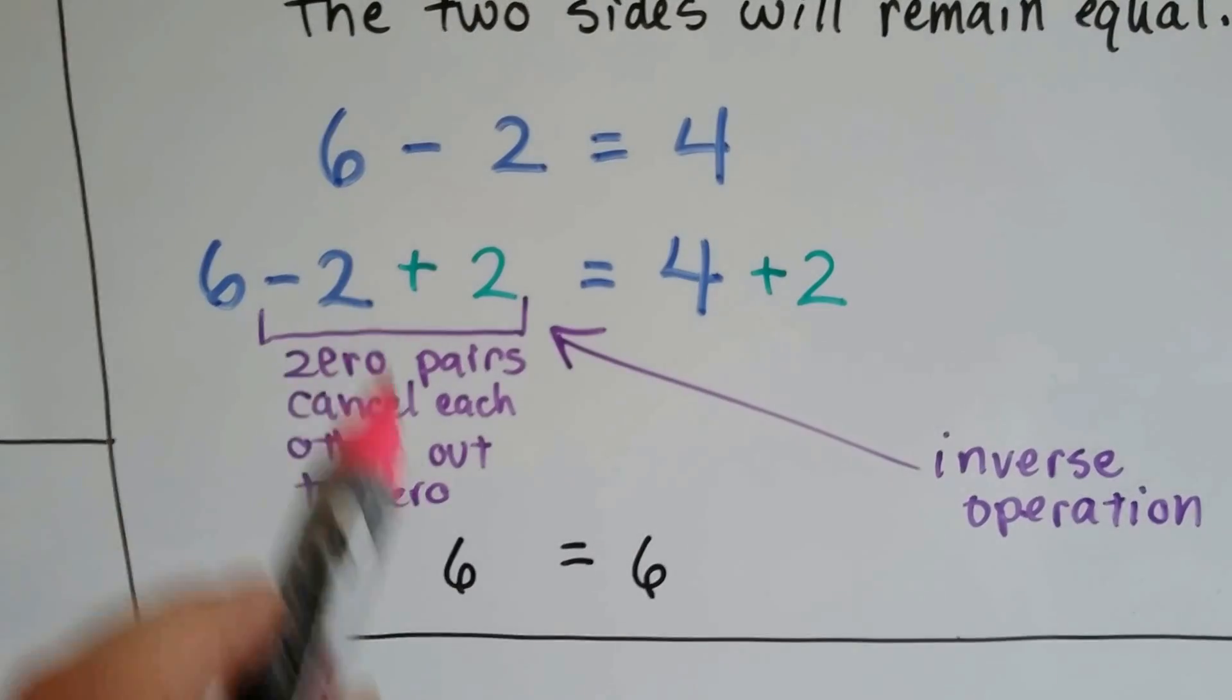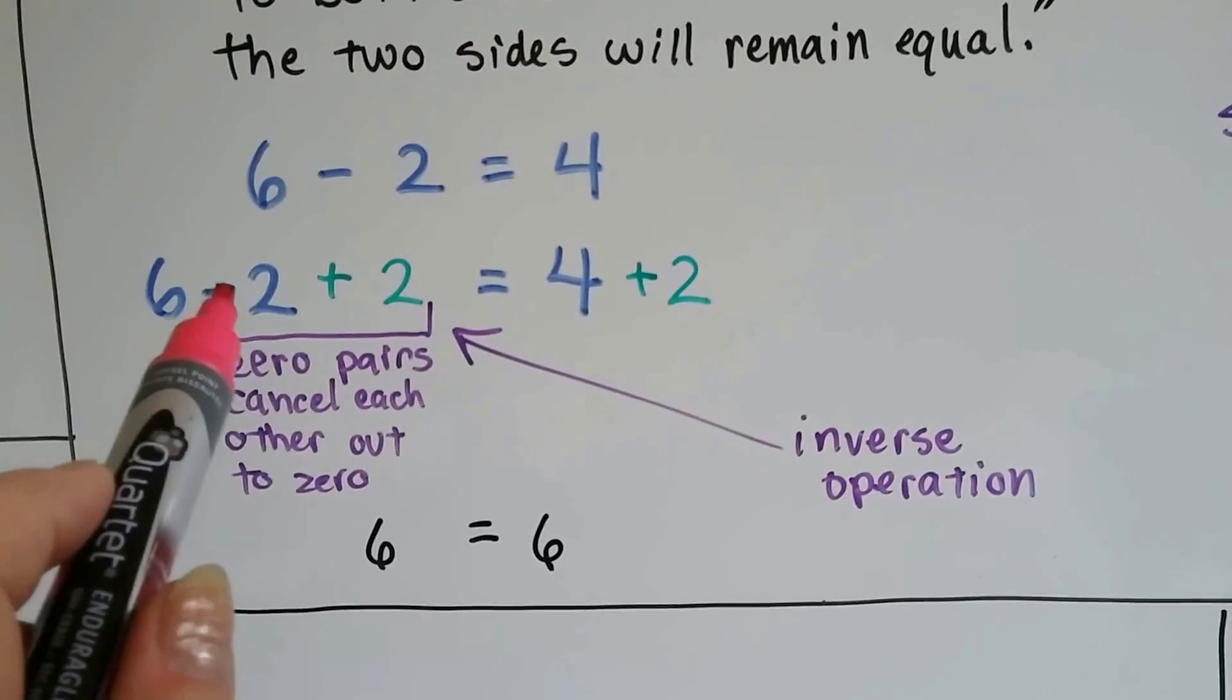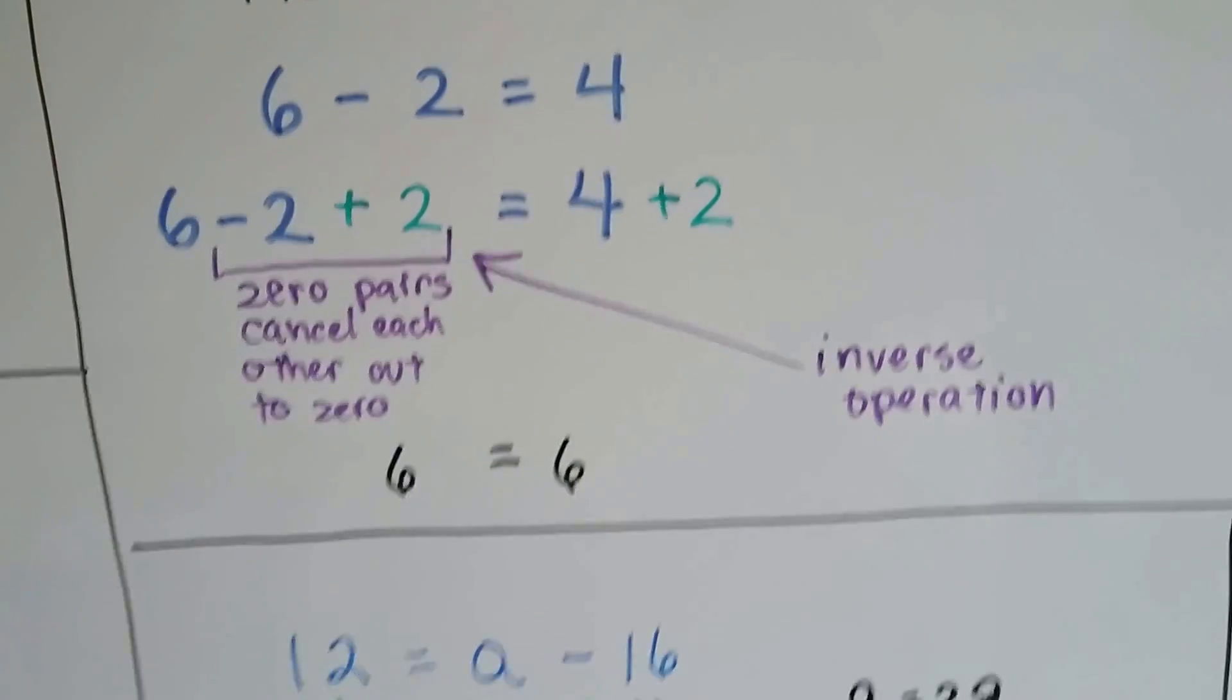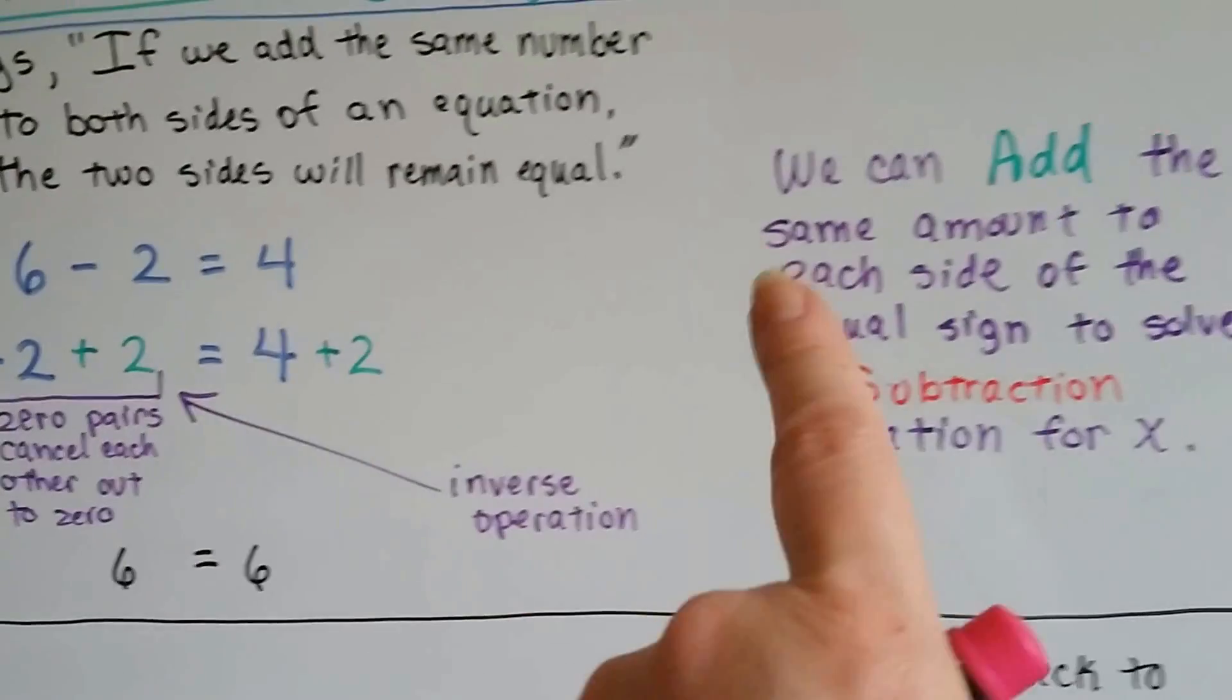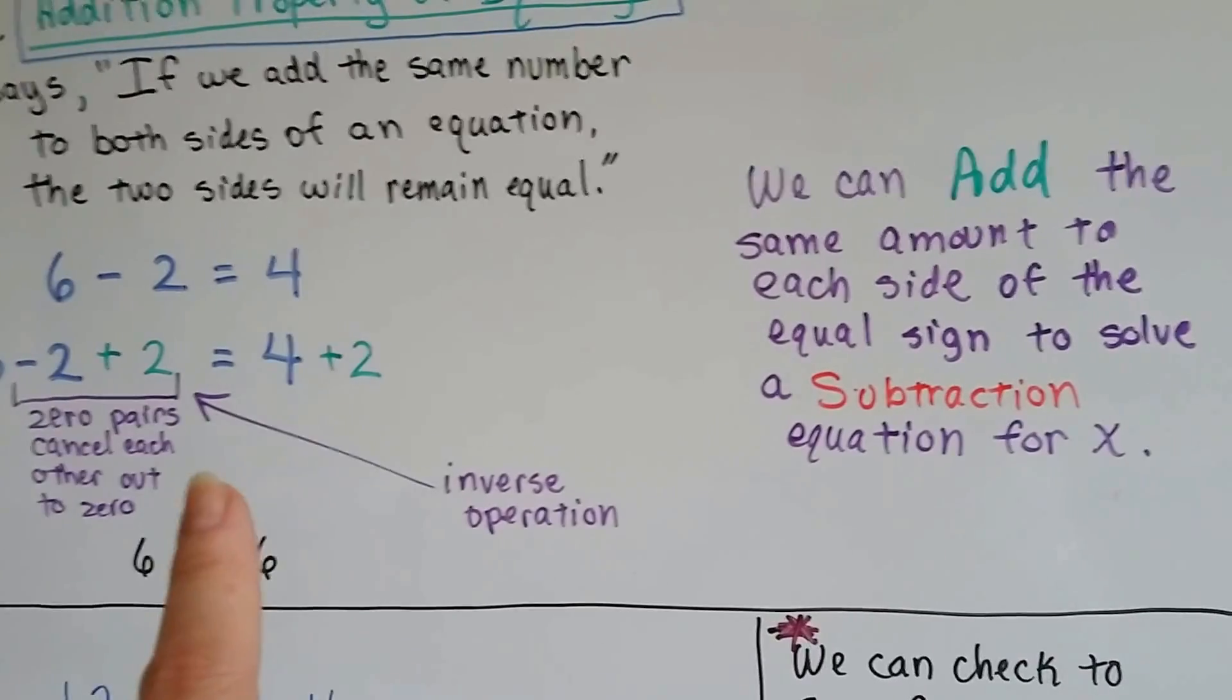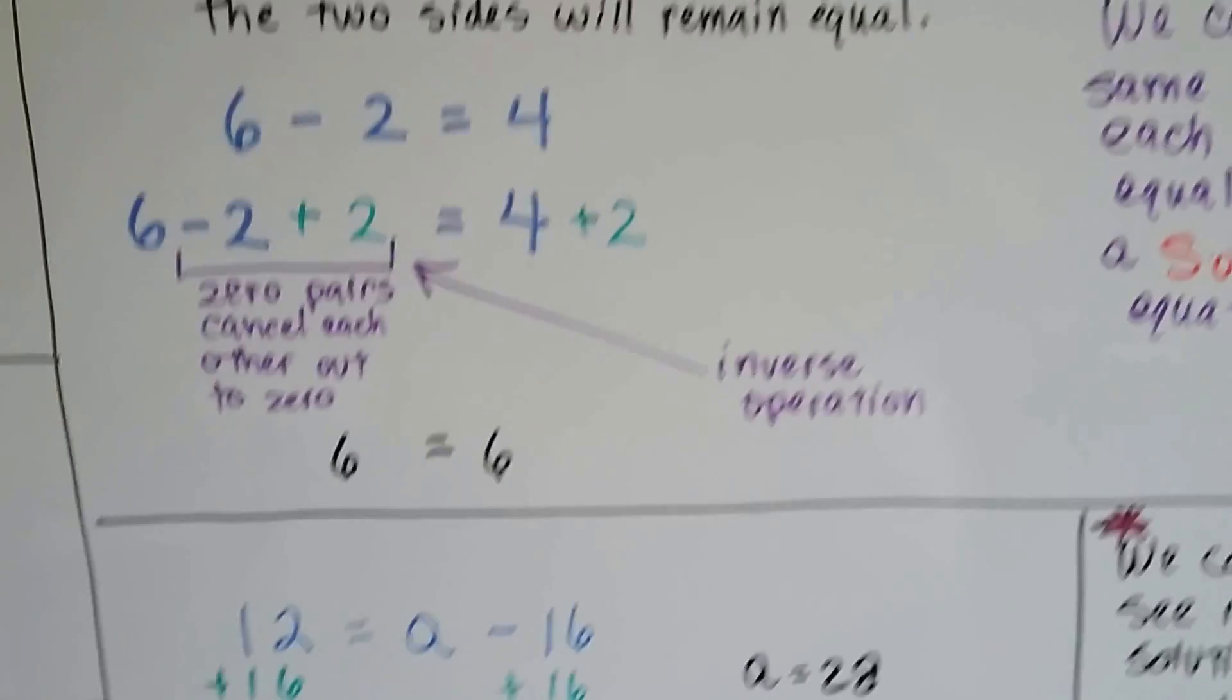6 minus 0 equals 6. And we do the inverse operation, the minus 2, we do plus 2 to do the opposite to cancel it out. So just so you know, we can add the same amount to each side of the equal sign in a subtraction equation to solve for x.